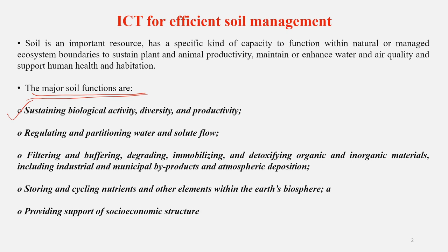The first function is sustaining biological activity, diversity, and productivity. In soil, we have millions and trillions of organisms residing there — many of them are bacteria, fungi, actinomycetes, etc. These not only maintain the soil's ecological diversity but also play a very important role in food production and productivity. These organisms in the soil also play a very important role in nutrient cycling — carbon cycling, phosphorus cycle, potassium cycle.